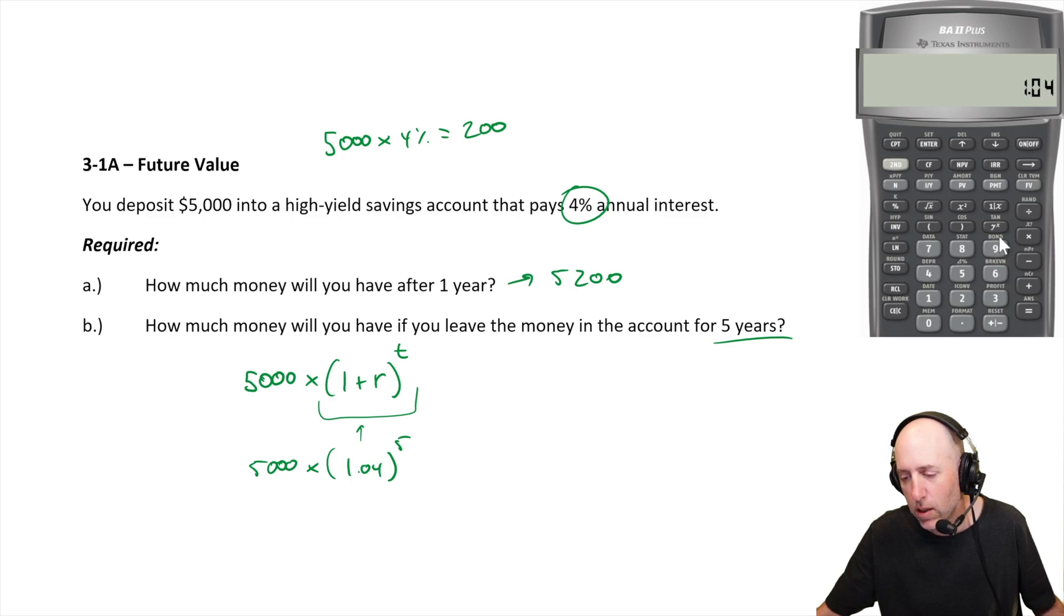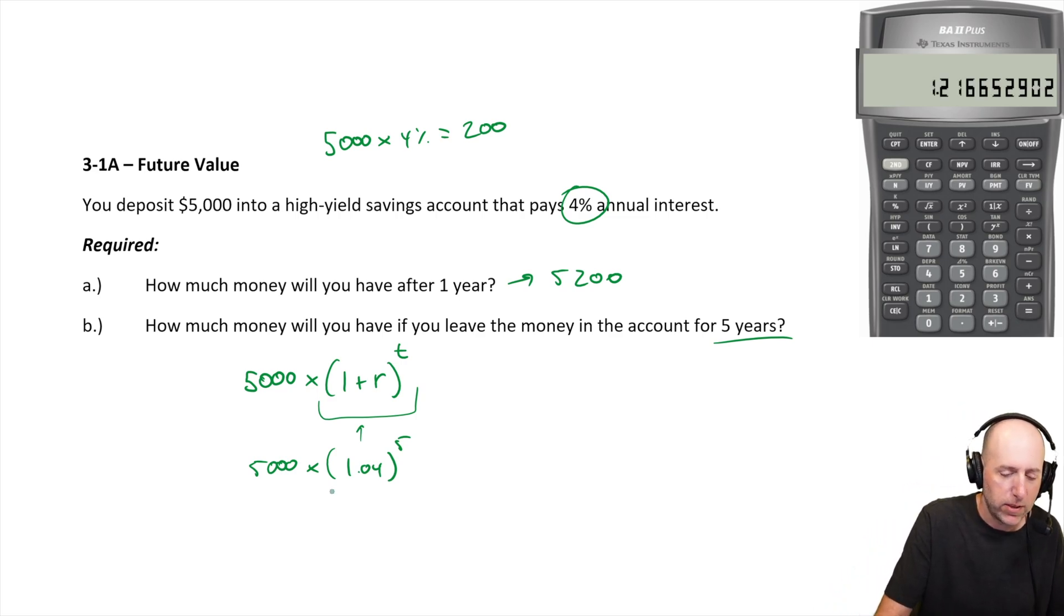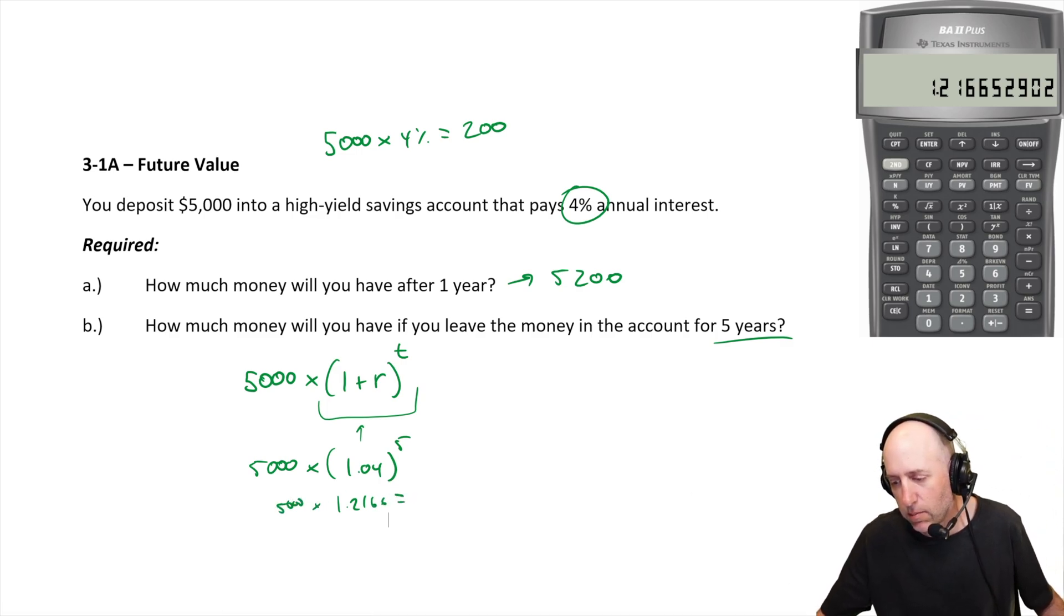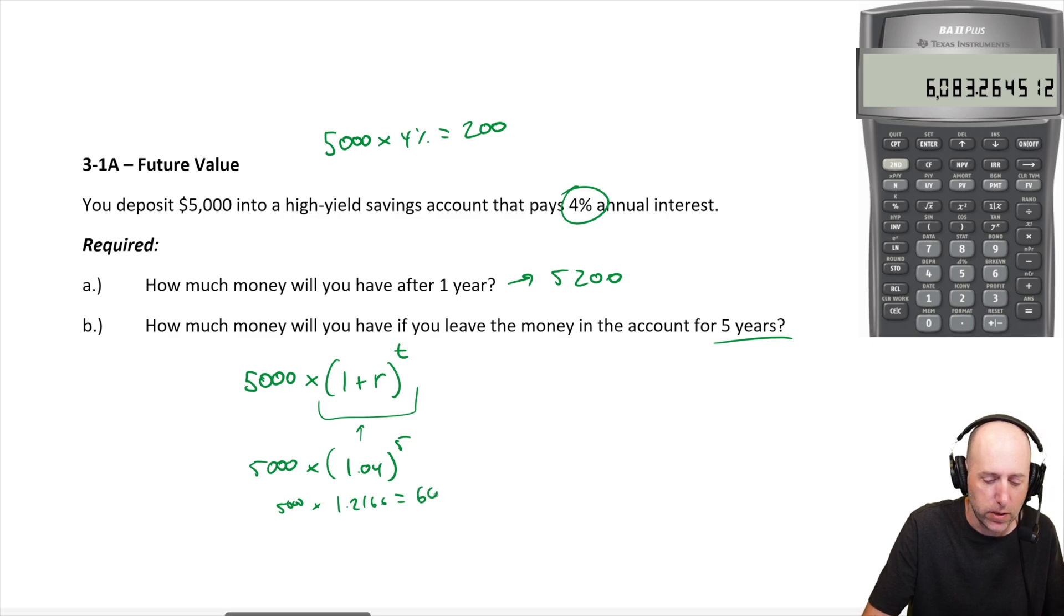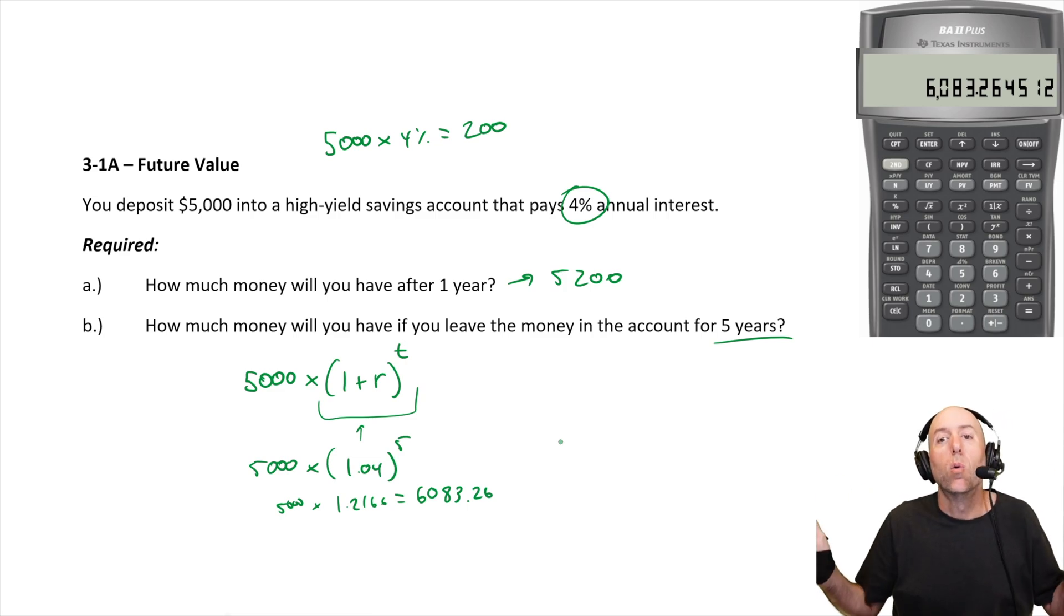So let's punch that in our calculator. 1.04. Y to the X that means to the power of, and it's the power of five. So 1.2166. That's what this equals 1.2166 times 5,000. So I'll just multiply this number by 5,000. And I get 6083.26, 6083.26. So there we've answered the question. We're done. And the idea is money grows when invested in an account that has interest, pretty straightforward.